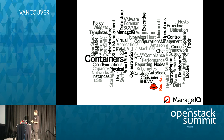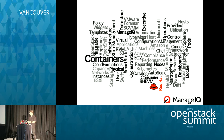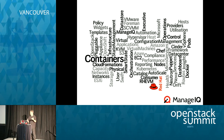We have a service catalog inside ManageIQ that allows you to request new services. Those services are heterogeneous in nature — because we manage VMware, Red Hat, OpenStack, Amazon, and Microsoft infrastructures, you're able to create heterogeneous bundles of applications. For example, a couple of web servers in EC2 with database back-ends in Red Hat Virtualization, tied together with load balancer configs — all inside our service catalog.